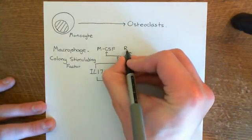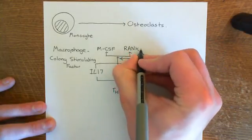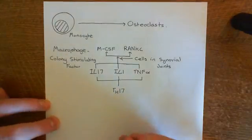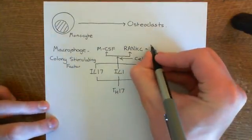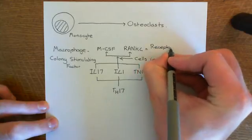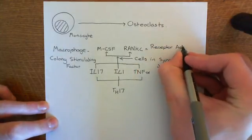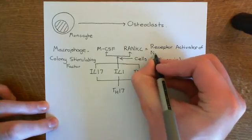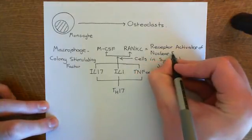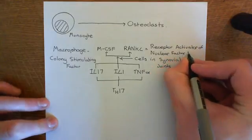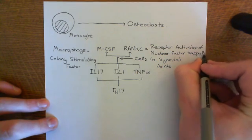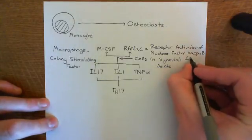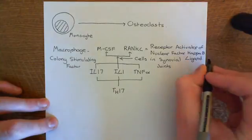The other molecule produced is RANKL — receptor activator of nuclear factor kappa B ligand. The R is for receptor, A is for activator, N is for nuclear, K is for kappa, and L is for ligand. So this is the receptor activator of NF kappa B ligand.